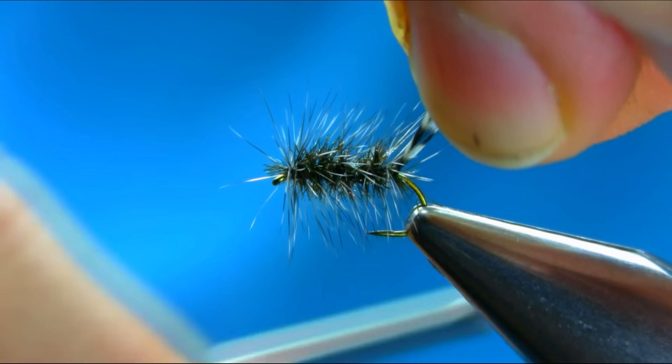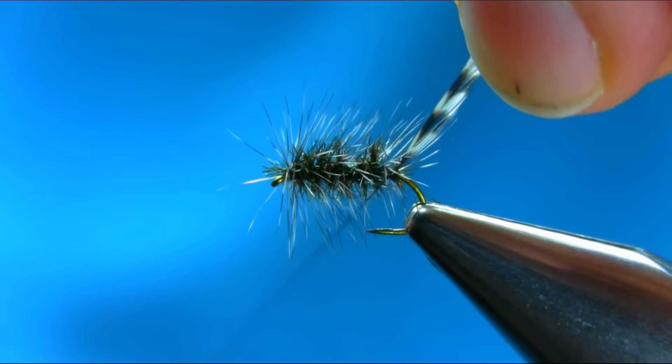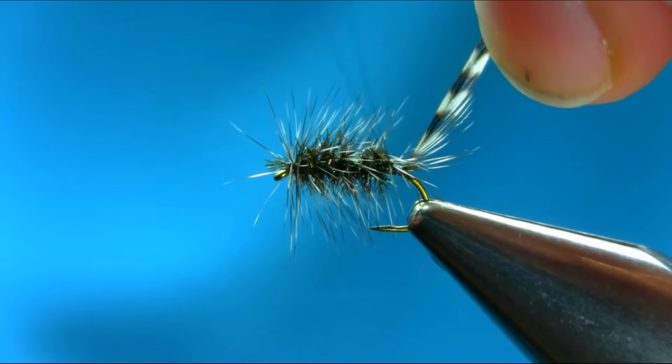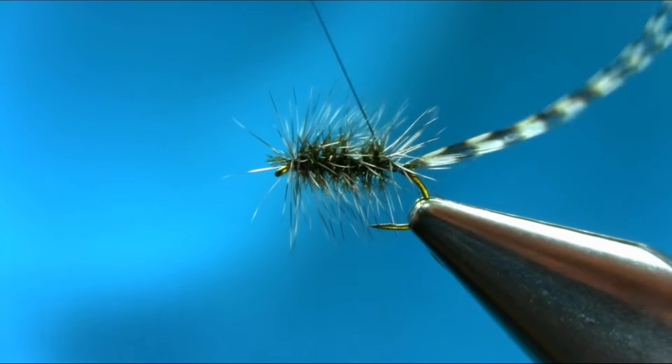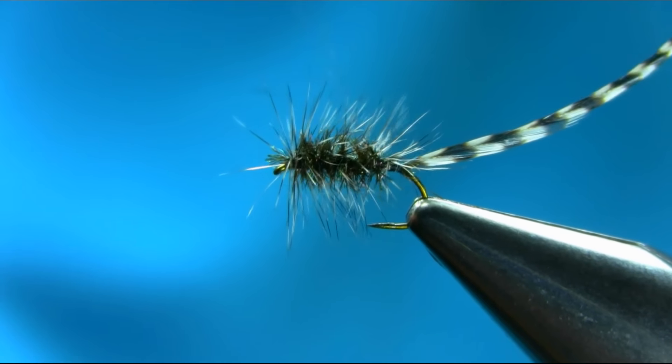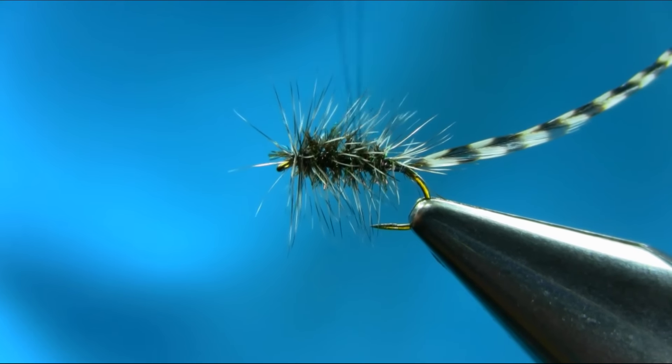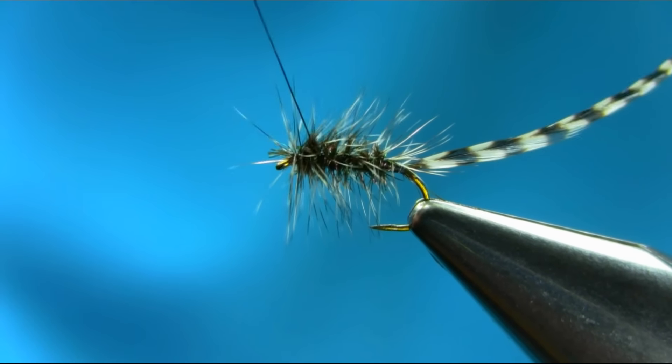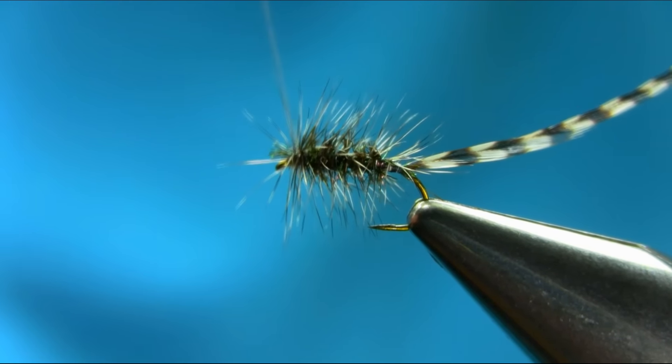And then with the same thread, now lock it nicely. Three, four turns. And just bring your, wiggle it around so you don't drop any fiber. You can tie that in a normal way.